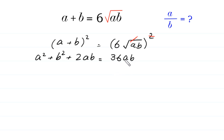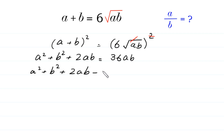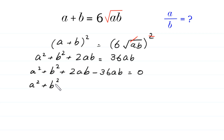Now we move 36AB to the left side. We get A squared plus B squared plus 2AB minus 36AB, which simplifies to A squared plus B squared minus 34AB is equal to 0.